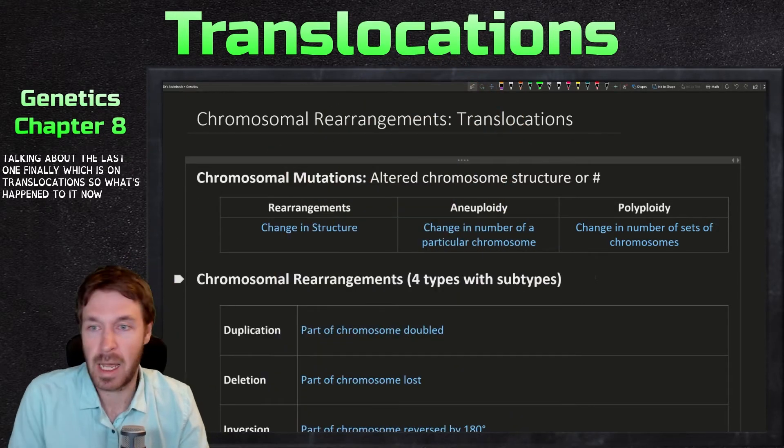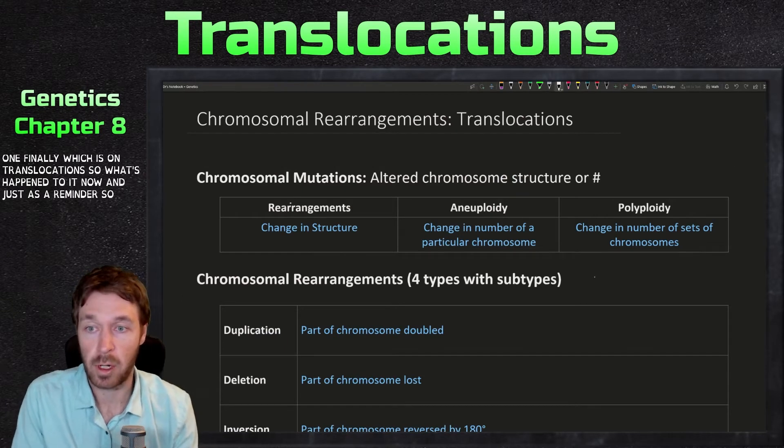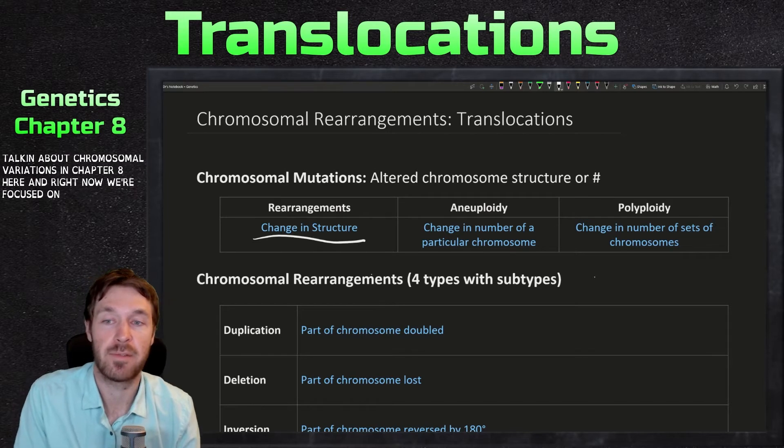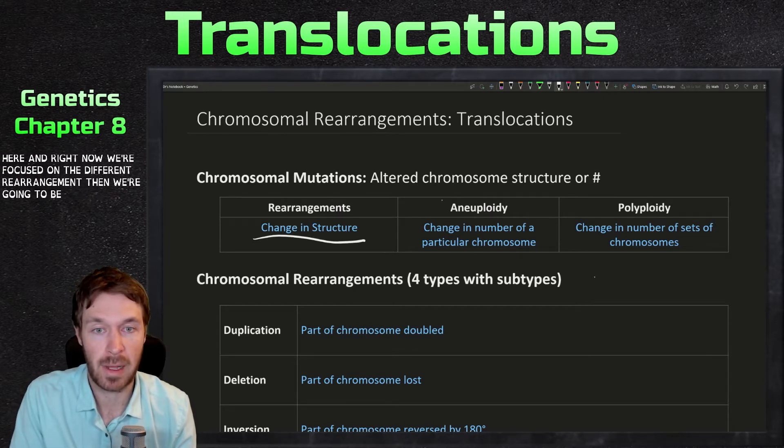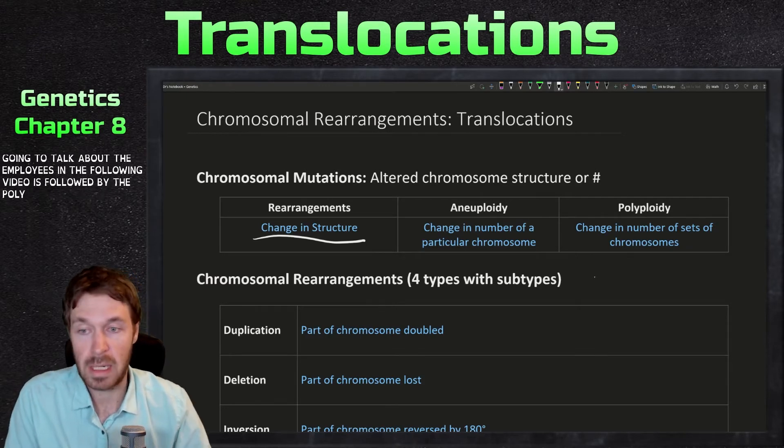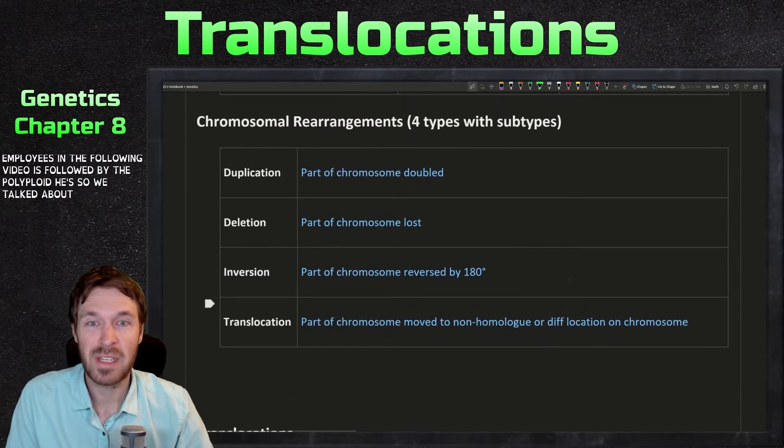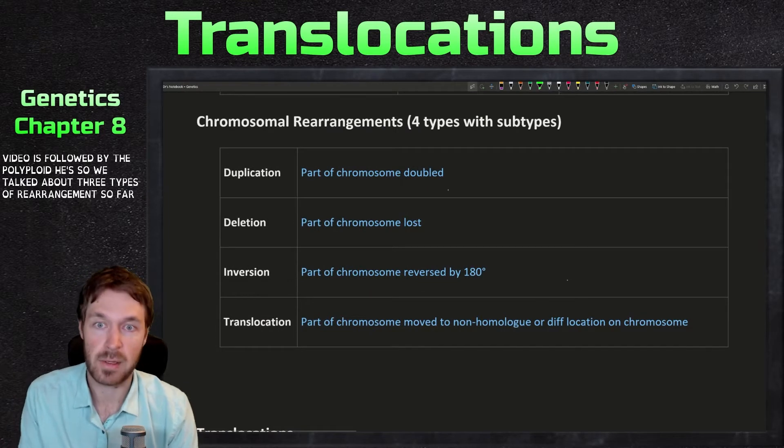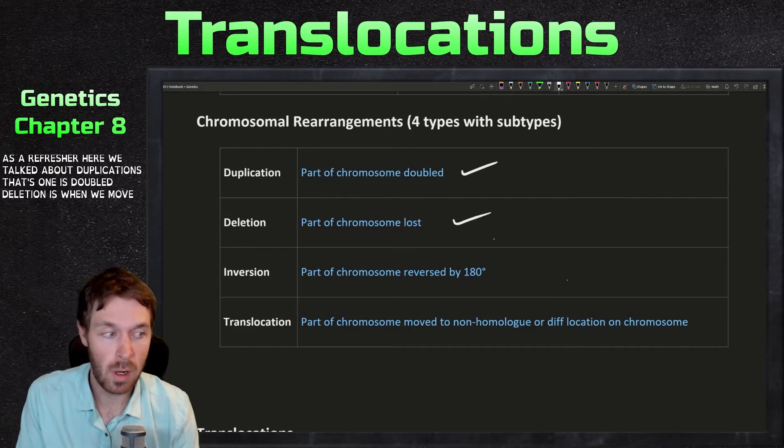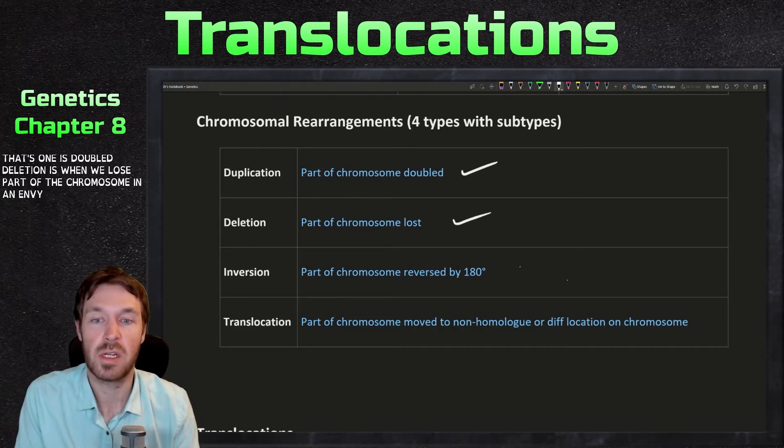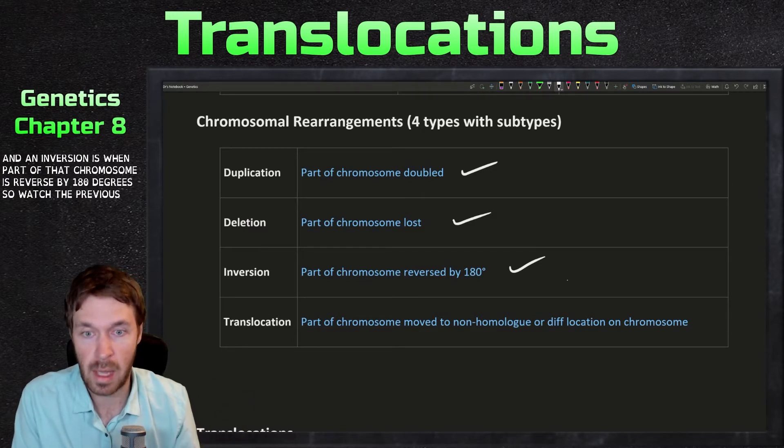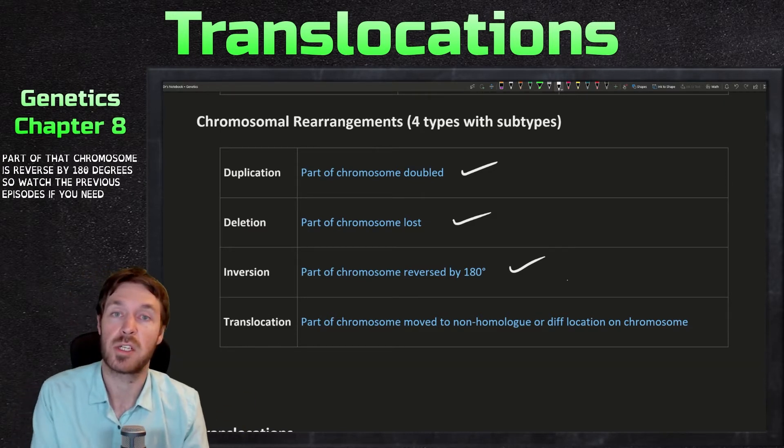So let's hop down just as a reminder, talking about chromosomal variations in chapter eight here. And right now, we're focused on the different rearrangements. Then we're going to talk about the aneuploidies in the following videos, followed by the polyploidies. So we talked about three types of rearrangements so far. As a refresher here, we talked about duplications. That's when it's doubled. Deletion is when we lose part of the chromosome. And an inversion is when part of that chromosome is reversed by 180 degrees. So watch the previous episodes if you need to catch up on those.